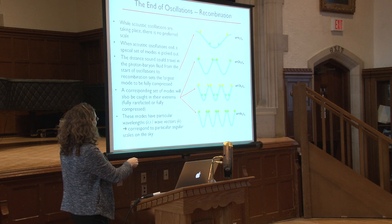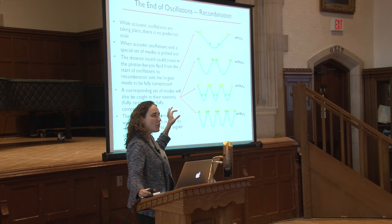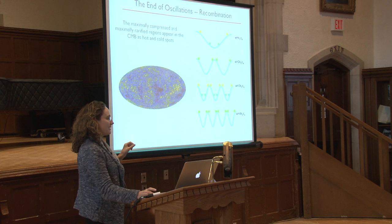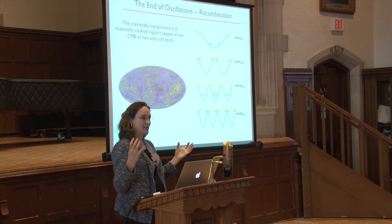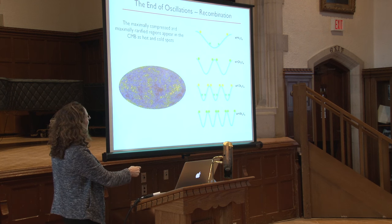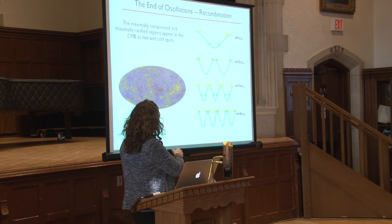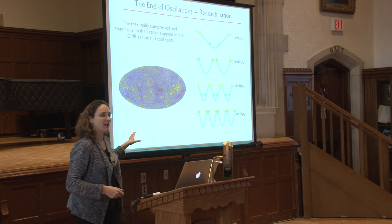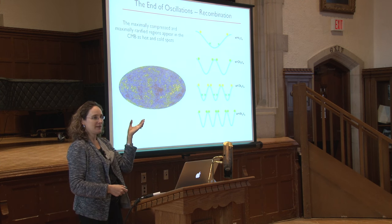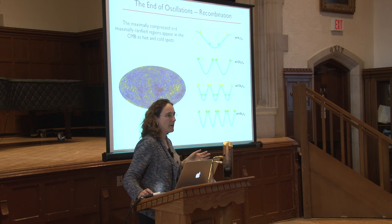These modes have particular wavelengths and wave vectors, and they correspond to particular angular scales on the sky at the moment when the photons escape. The maximally compressed and rarefied regions are the hottest and coldest regions in the microwave background. When you look at a picture of these fluctuations, they appear as the hot and cold spots in the microwave background. Already with your eye, you can pick out a characteristic size — a dominant angular scale at which these fluctuations appear.